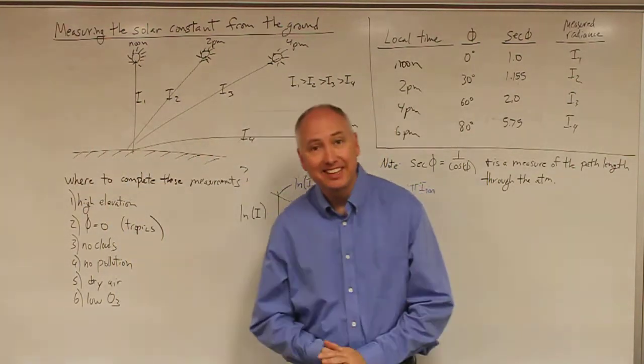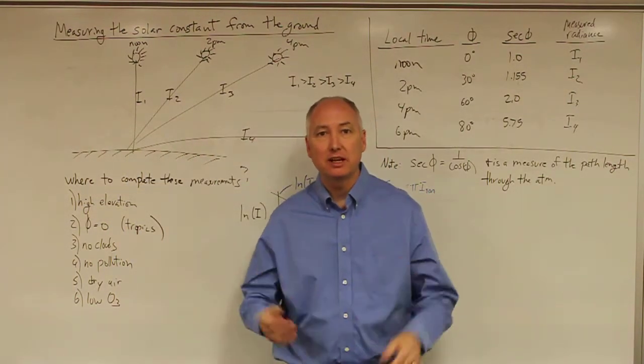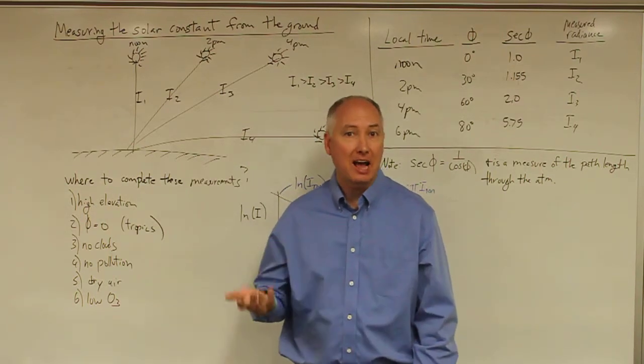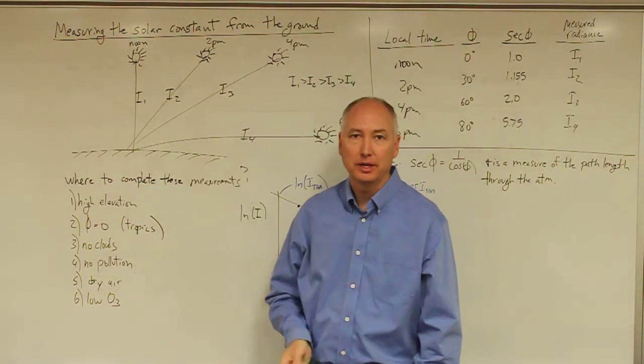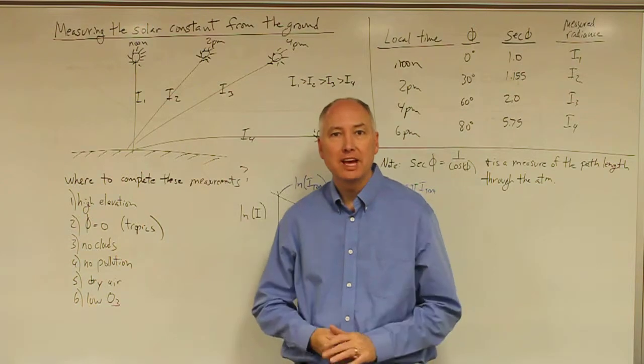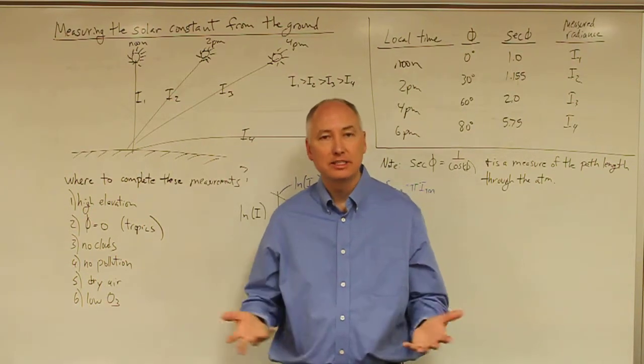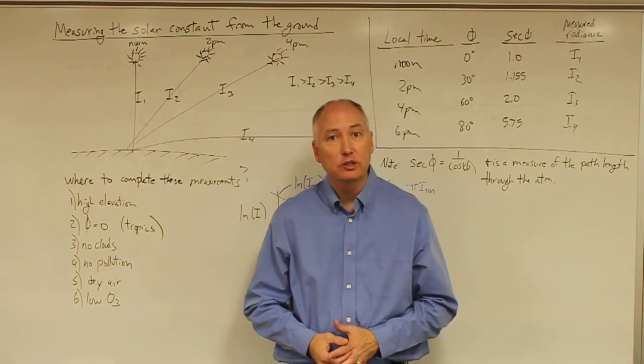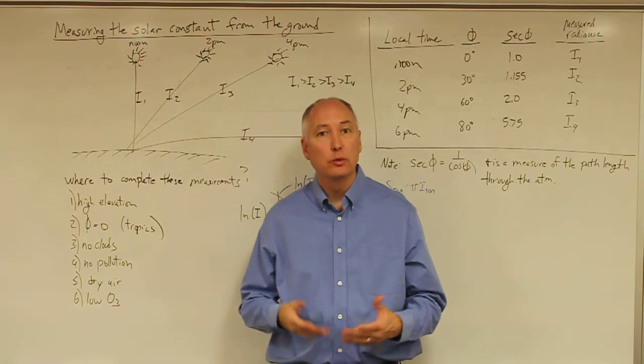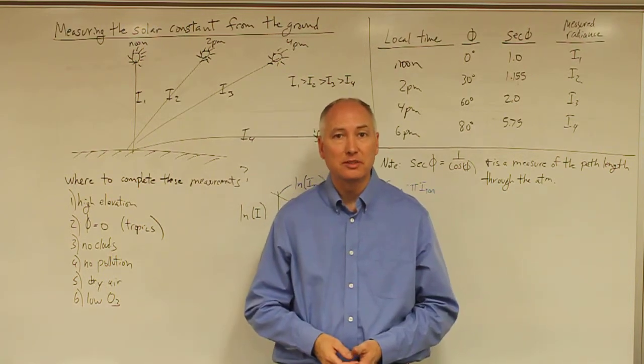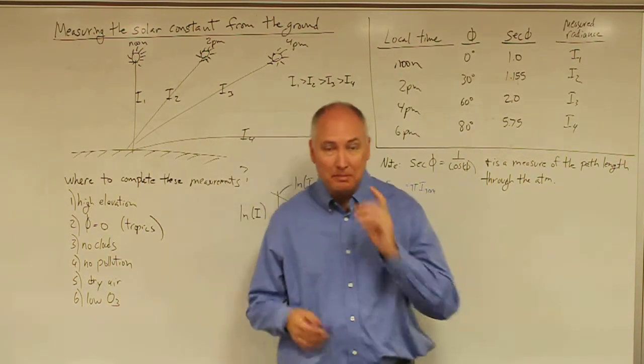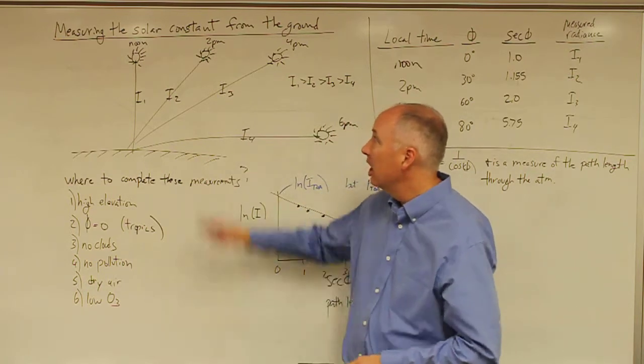The solar constant is an easy thing to measure now because we have satellites that are above the atmosphere of the Earth that point and look directly at the Sun. Prior to the advent of satellites, scientists had to be a little more creative in trying to figure out what the irradiance was at the top of the Earth's atmosphere coming from the Sun. And one of the methods that they devised was the following.